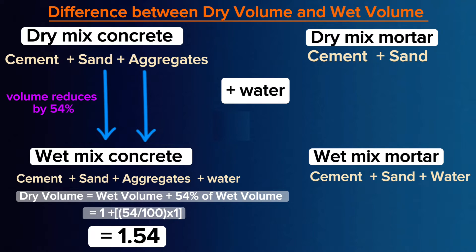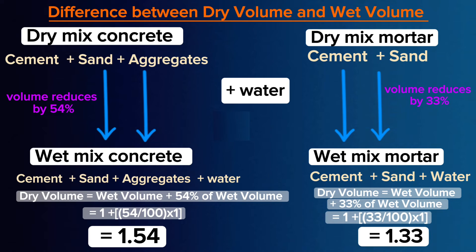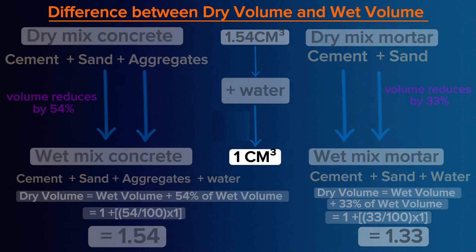This concept also applies to mortar. Cement simply mixed with sand is a dry mix volume. So when you add water, this mix reduces by 30% to 35%, so on average we consider 33%. In simple terms, when you have 1.54 cubic meters of dry mix and then you add water, it reduces by 54% and you remain with 1 cubic meter.